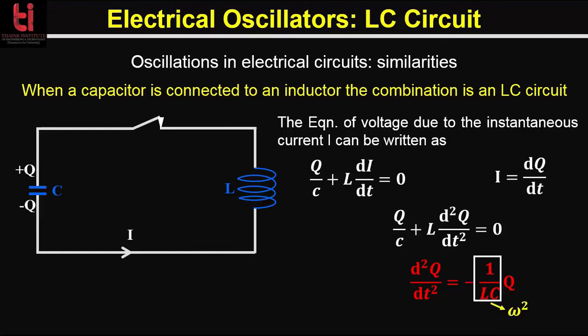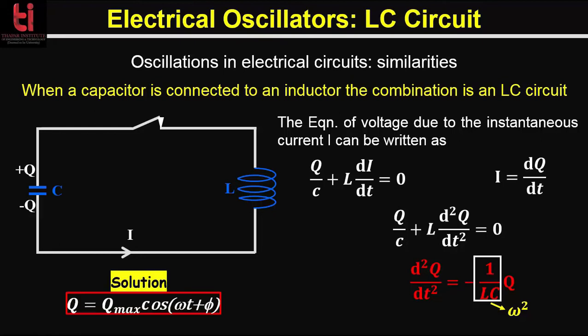Now if we consider that 1/(LC) equals ω², this equation is of the same form as for the mechanical system — that is for the spring oscillator or the pendulum — and represents simple harmonic motion. With the initial condition that at t = 0 the charge on the capacitor has its maximum value, the solution to this equation is Q = Q_max·cos(ωt + φ), where Q_max is the initial charge on the capacitor.